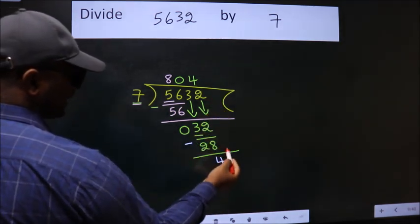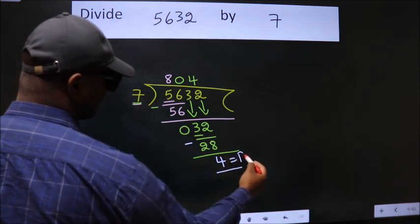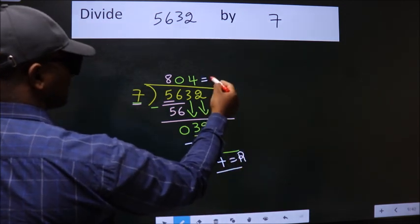No more numbers to bring down. So we stop here. This is our remainder. This is our quotient.